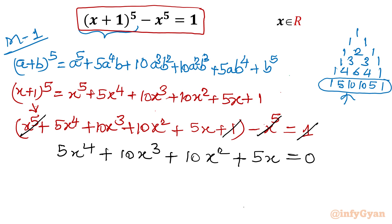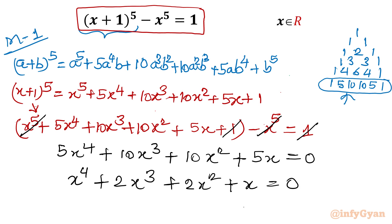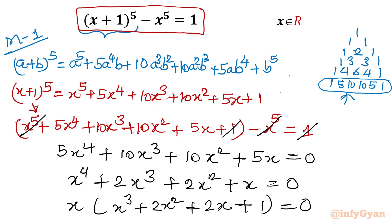Dividing the equation by 5 gives x^4 + 2x³ + 2x² + x = 0. Taking x as a common factor: x(x³ + 2x² + 2x + 1) = 0. So one solution is immediately clear: x = 0. Either x = 0, or the cubic equation x³ + 2x² + 2x + 1 = 0.